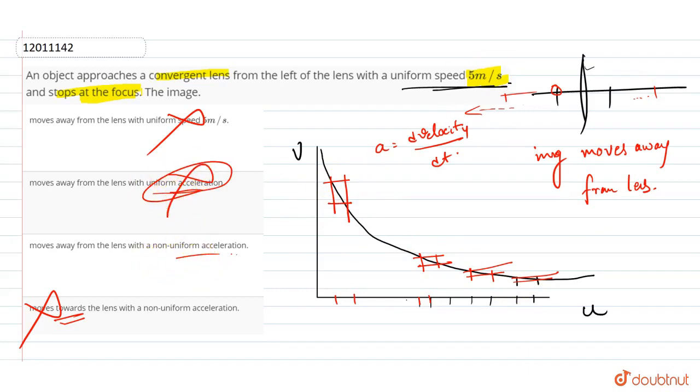Therefore, it's moving with non-uniform acceleration, so the correct answer is option C, which says the image moves away from the lens with non-uniform acceleration.